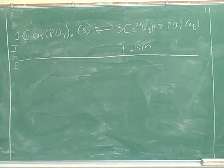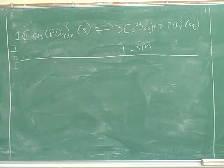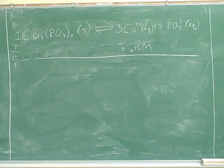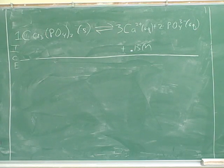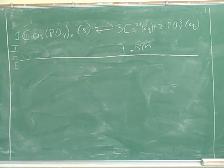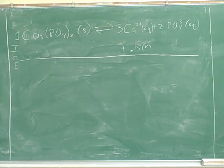So it means that we need 1 multiplied by 0.15 molars, and it's going to give us the molarity of calcium₃(PO₄)₂. And also from that, we can find the other values. Let's try working this out on paper.